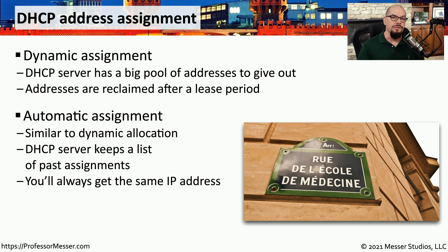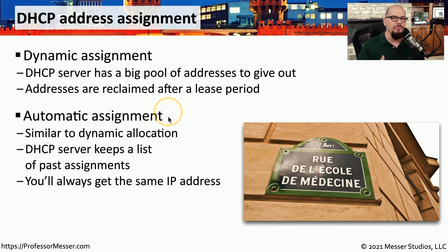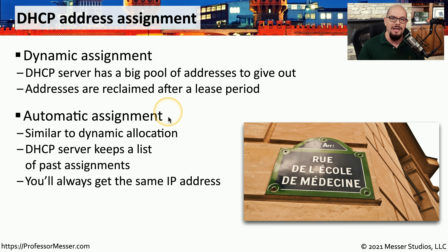Many DHCP servers will also have an automatic assignment process, which means that once the IP address has been assigned to a workstation, that IP address will always be available if possible. That way, if you leave and come back in a week, you may be assigned exactly the same IP address again. This makes the assignment process a bit easier, although it does require additional overhead and a larger pool to support all of these devices that may or may not currently be on the network.